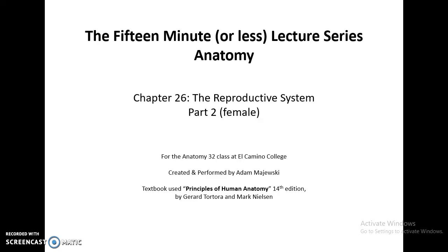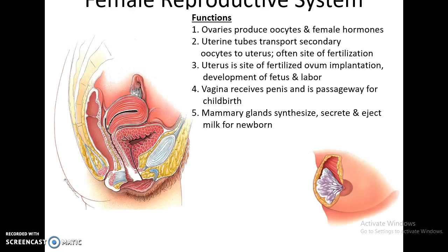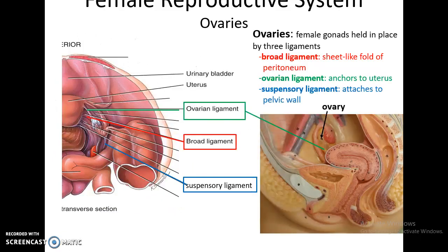This is the 15-minute or less lecture series, Human Anatomy, Chapter 26: Reproductive System, Part Two. The female reproductive system has a variety of functions. Within the ovaries, oocytes are produced and female hormones are secreted. The uterine tubes transport the secondary oocyte to the uterus and are often the site of fertilization. The uterus provides a site for the ovum to implant and for the fetus to develop, and begins the labor process. The vagina receives the penis and is the passageway for childbirth. The mammary glands synthesize, secrete, and eject milk for the newborn.